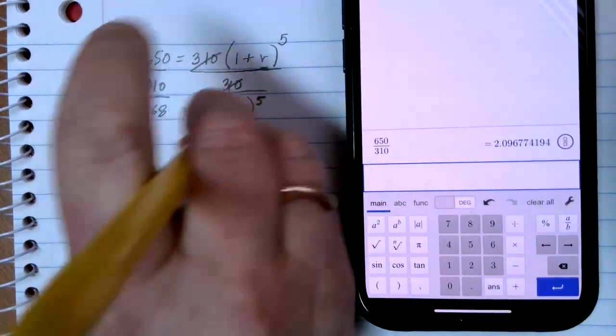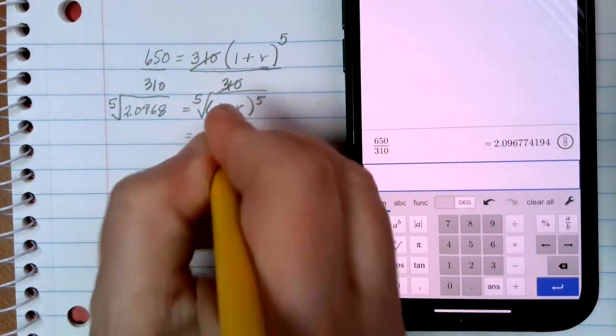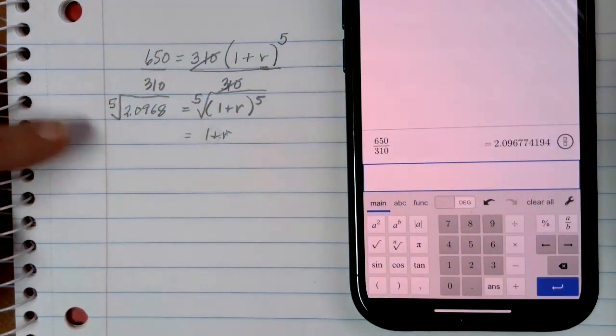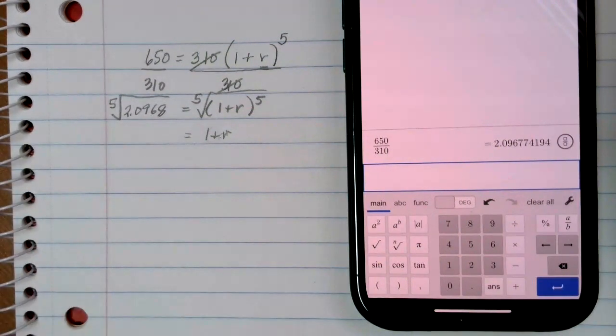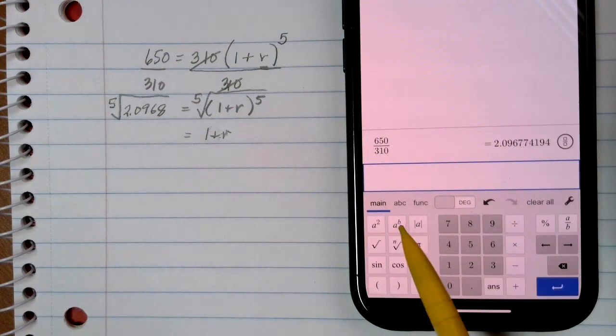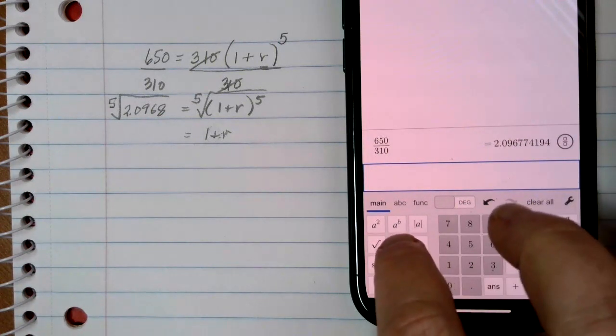On the left, I have to take this 5th root of 2.0968. Now, remember our exponent button in Desmos is located right here, the A to the B button. The root button is located just underneath it, which is convenient. A to the B does the power. The nth root undoes the power. So I'm going to go ahead and push that nth root button.